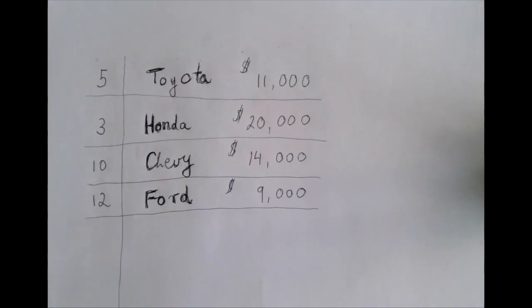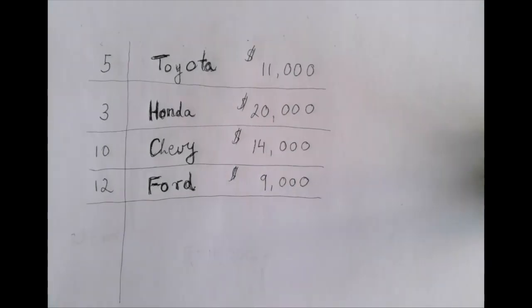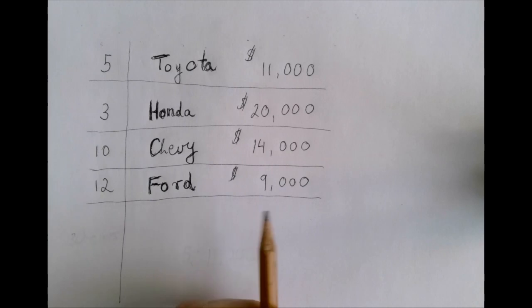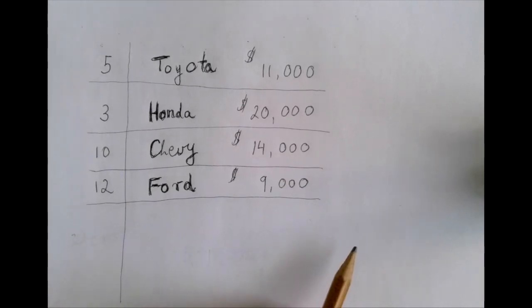Now this is where the example becomes even more forced, but let's just roll with it for the sake of the numbers. Suppose we are in a large dealership where we have lots of cars. We have five Toyotas each worth $11,000, three Hondas each worth $20,000, ten Chevys each worth $14,000, and twelve Fords each worth $9,000.